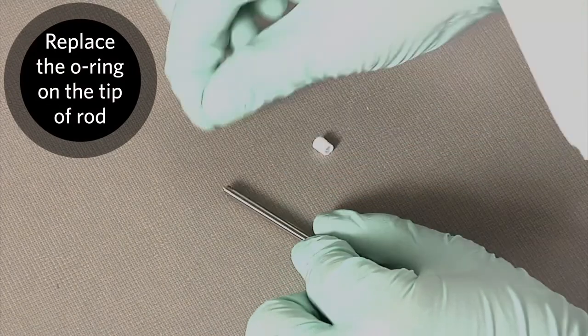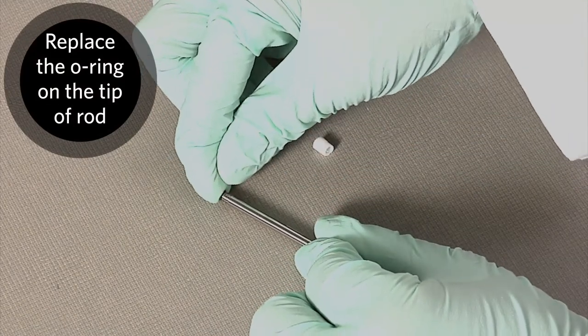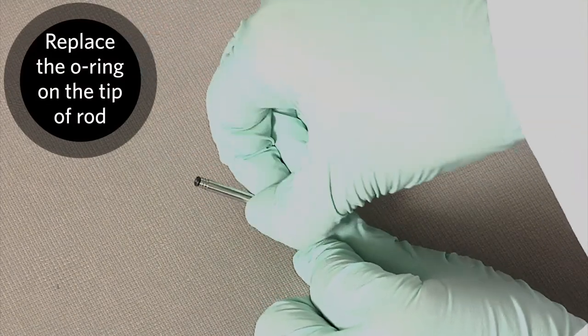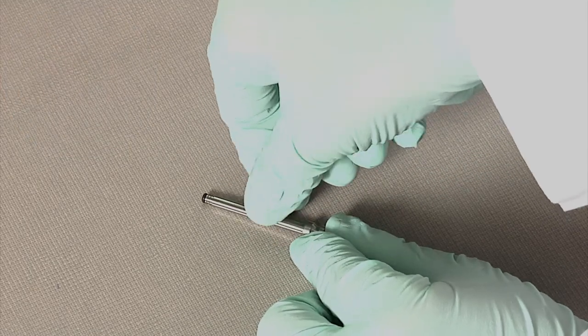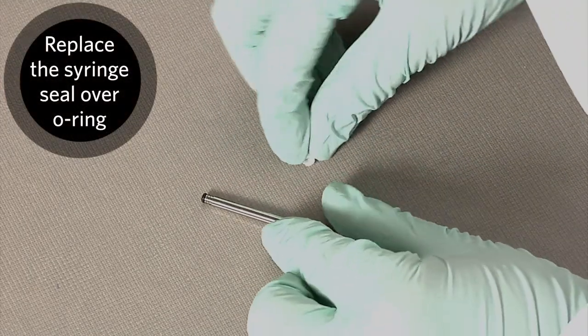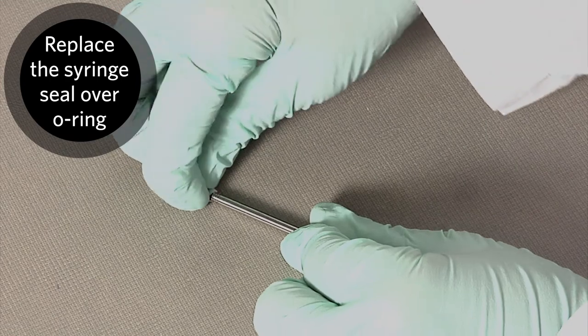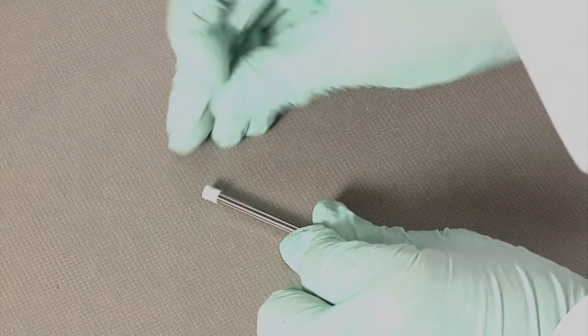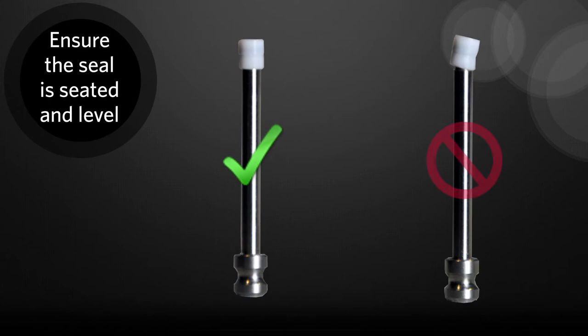Replace the o-ring on the tip of the plunger rod. Then replace the syringe seal over the o-ring. Ensure the seal is fully seated and the top is level.